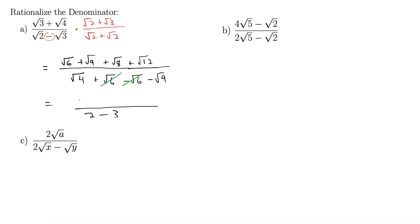Up in the numerator, we have rad 6. Nothing we can do to rad 6. But radical 9, square root of 9, is 3. Square root of 8 is 2 rad 2, because square root of 8 is actually, we're looking for perfect squares in there. 4 times 2. The 4 makes it out as a 2, so that's 2 rad 2. And for the same reason, rad 12 here is plus 2 rad 3.